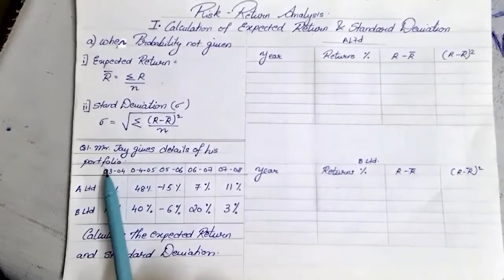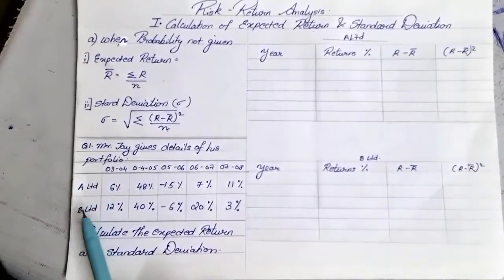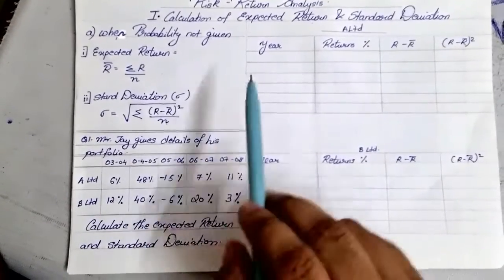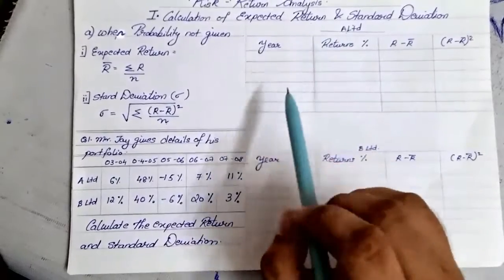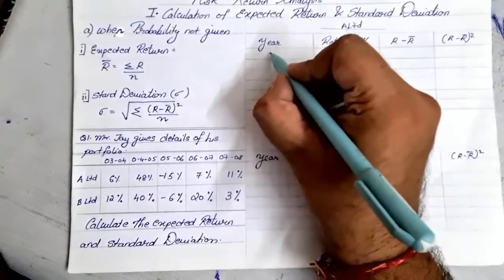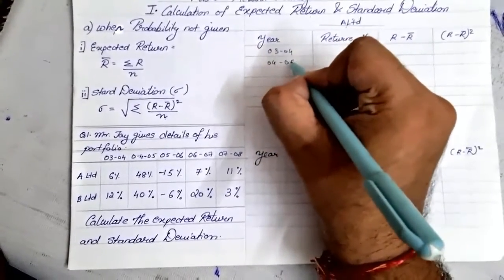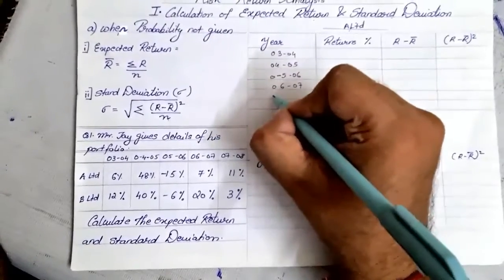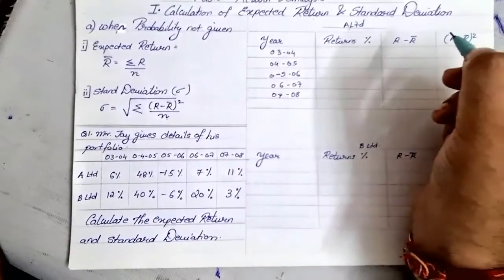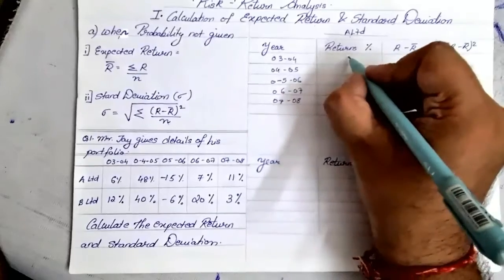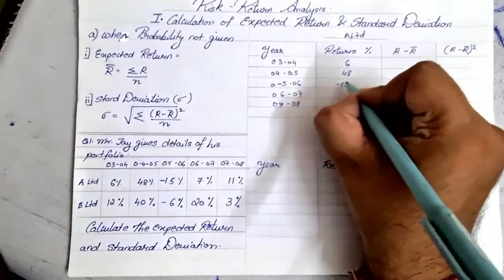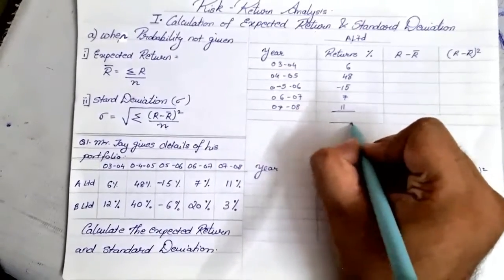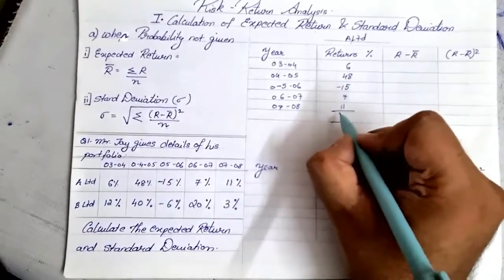The question given here is: Mr. J gives details of his portfolio. There are multiple years and they are giving you returns of A Limited and B Limited, and they are asking you to calculate the expected return and standard deviation. Let us start finding the expected return and standard deviation for A Limited. The years are 2003–2004, 2004–2005, 2005–2006, 2006–2007, and 2007–2008. The returns noted down are 6%, 48%, negative 15%, 7%, and 11%. The total of that, when you add up and subtract the negative 15, comes to 57.